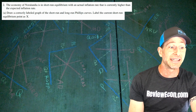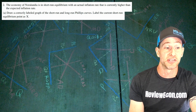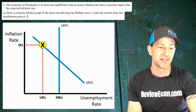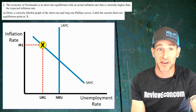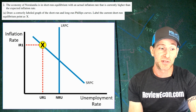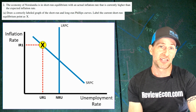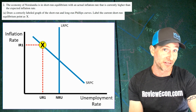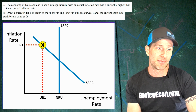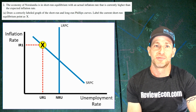On to question number two. The economy of Norlandia is in short run equilibrium with an actual inflation rate that is currently higher than the expected inflation rate. We're going to draw the short run and long run Phillips curve and label the short run equilibrium as point X. We have our long run Phillips curve with the natural rate of unemployment, a downward sloping short run Phillips curve, and we are above the intersection between the two curves — that's where the actual inflation rate exceeds the expected inflation rate. Point X is labeled up high on the short run Phillips curve.